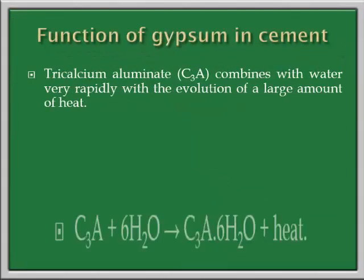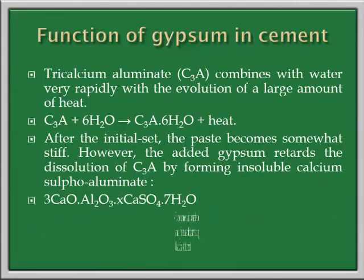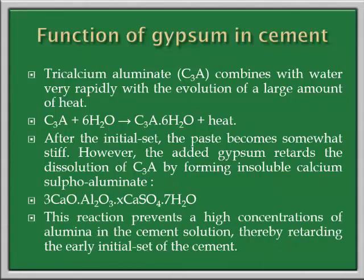Now we have to see the function of the important ingredient gypsum. Tricalcium aluminate when it combines with water very rapidly causes evolution of a large amount of heat. After the initial set the paste becomes somewhat stiff. Without gypsum, the whole mass will crystallize as fast as possible and we cannot give the desired shape to the cement. Therefore 2 to 3 percent of gypsum is added. Gypsum retards the dissolution of C3A by forming insoluble calcium sulfo aluminate. This enhances the initial setting and gives a gel formation which remains soft so we can give the desired shape to the cement by adding it to the respective mold, thus retarding the early initial set.